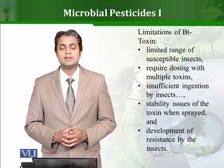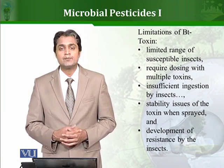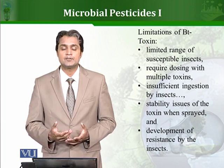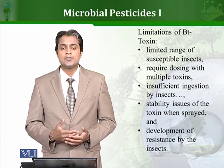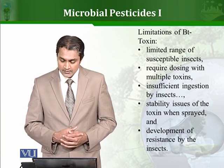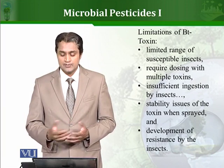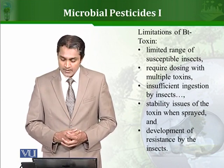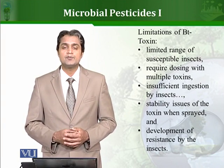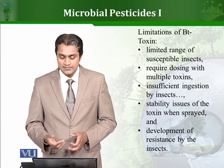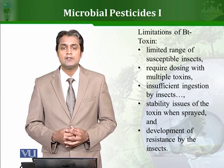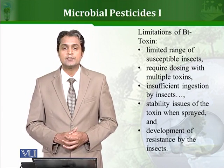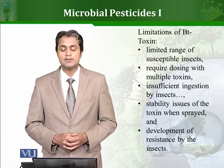Sometimes insects do not ingest a sufficient level of Bt toxin, so they will not be killed — this is again a limitation. Another issue is the stability of Bt toxin: how stable it remains in the soil, its shelf life, and how often it needs to be re-applied. On the positive side, its low stability also means it is not recalcitrant and can break down on its own, so it does not cause any environmental burden. However, like any other pesticide, if insects and pests are exposed to Bt toxin repeatedly, they can develop resistance, which is why research must continue to find more potent microbial pesticides. We'll talk more about microbial pesticides in our next lessons.